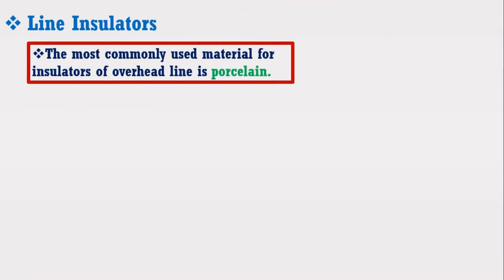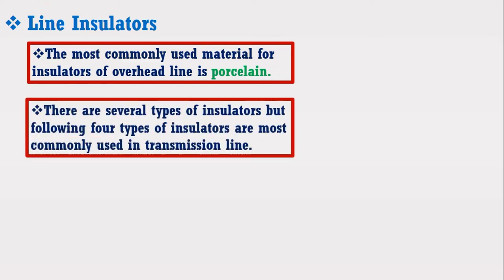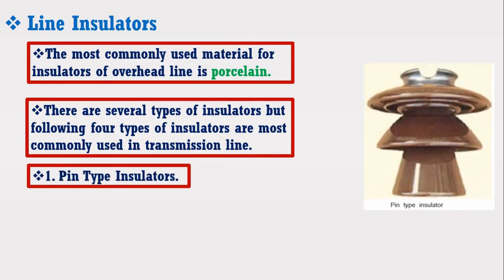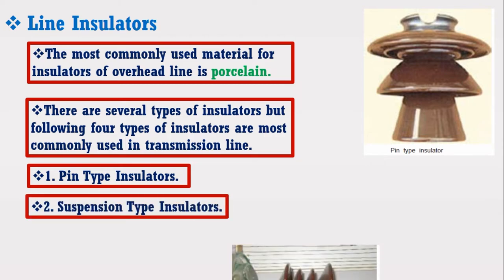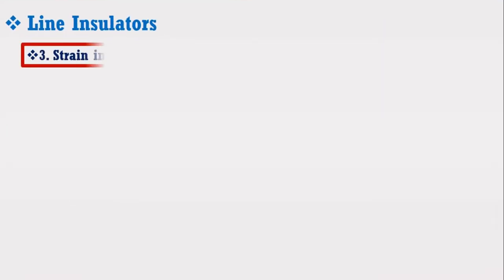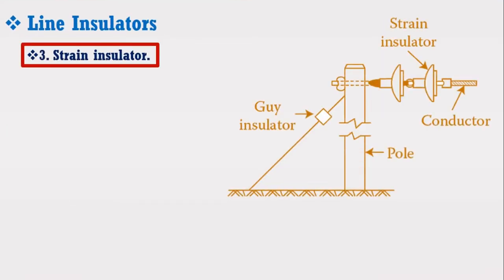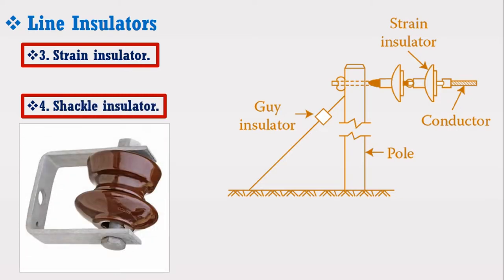The most commonly used material for insulators of overhead line is porcelain. There are several types of insulators, but the following four types are most commonly used in the transmission line: 1. Pin type insulators, 2. Suspension type insulators, 3. Strain insulators, 4. Shackle insulators, as shown in the figures.